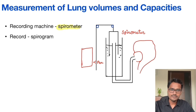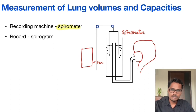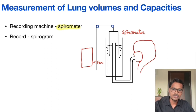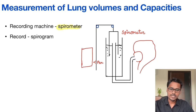First the subject will be asked to take a few normal breaths — inspiration and expiration. Then the subject will be asked to take a deep breath, as much as possible. Then again some normal breaths followed by a deep expiration, then normal breaths followed by a deep inspiration and then deep expiration. This is how the recording goes.